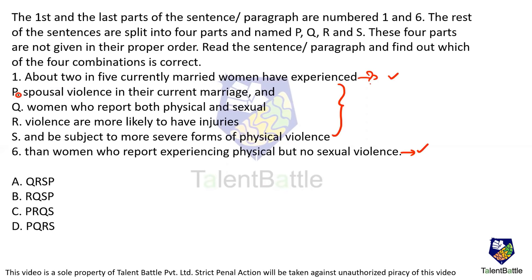Can Q follow directly? Q says 'women who report both physical and sexual' — that does not make sense after 'have experienced.' Can R follow? R says 'violence are more likely to have injuries' — possible, but what violence is not clearly specified yet. S says 'be subject to' — not making sense directly. So P most likely comes first after the opening.